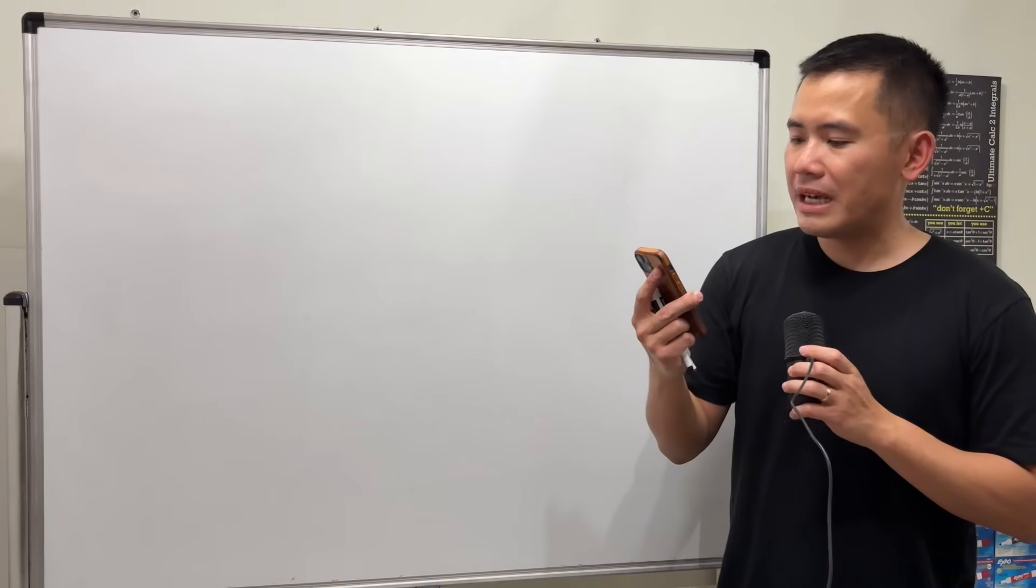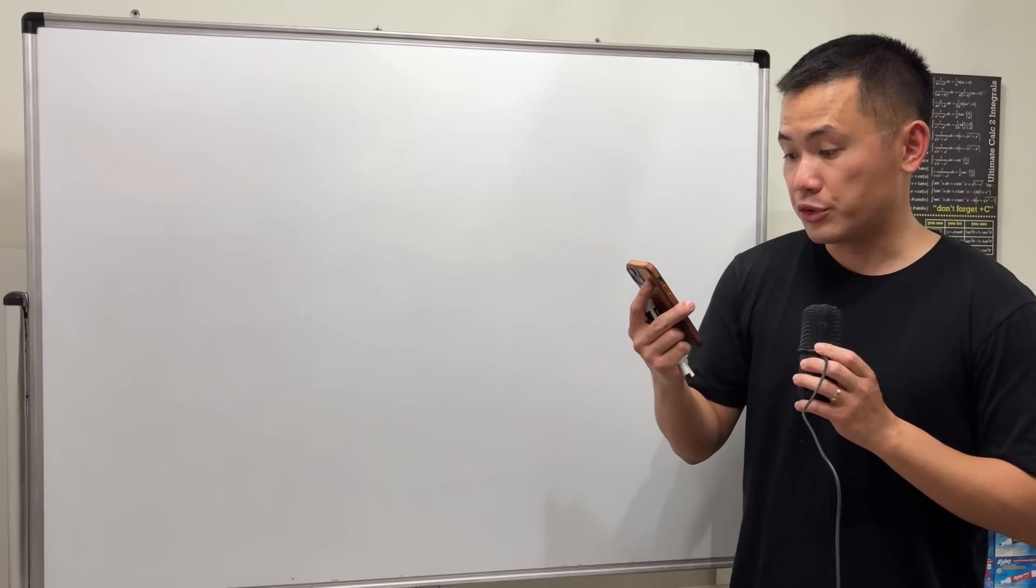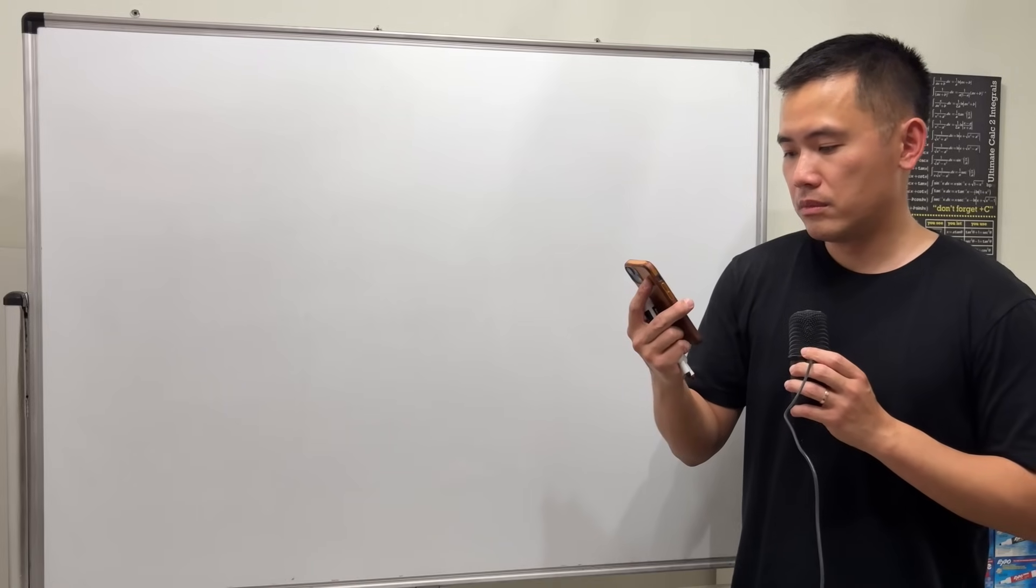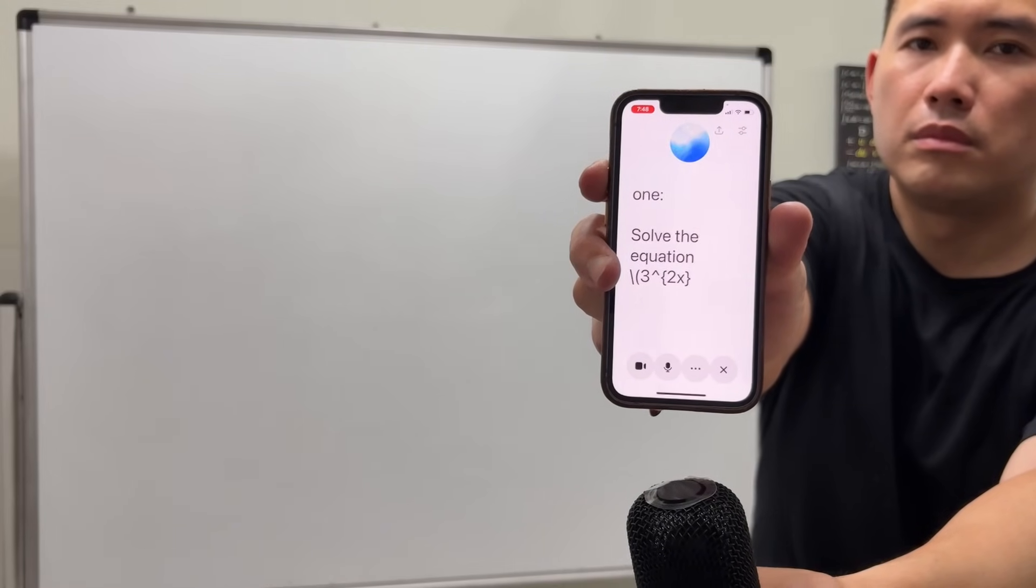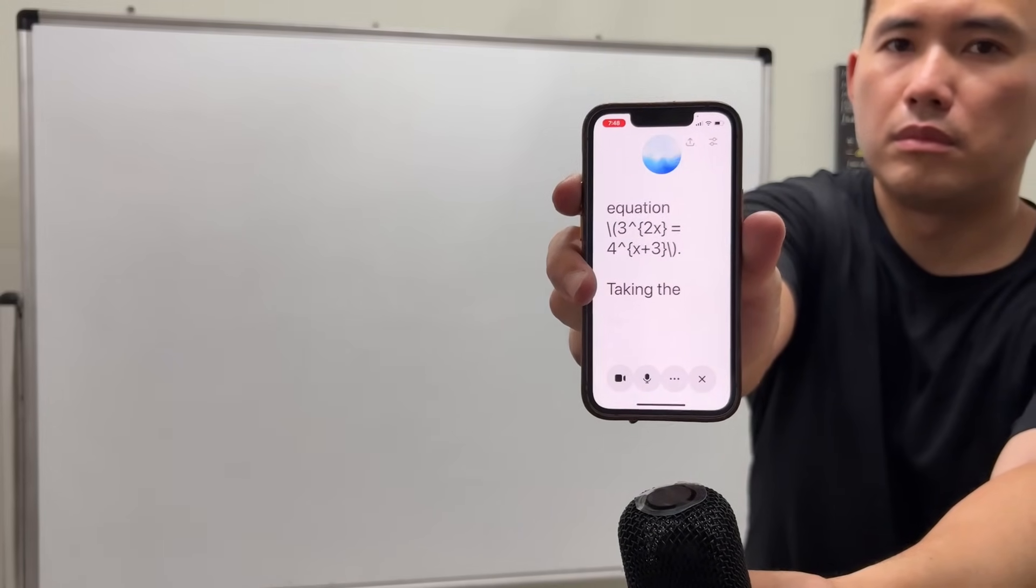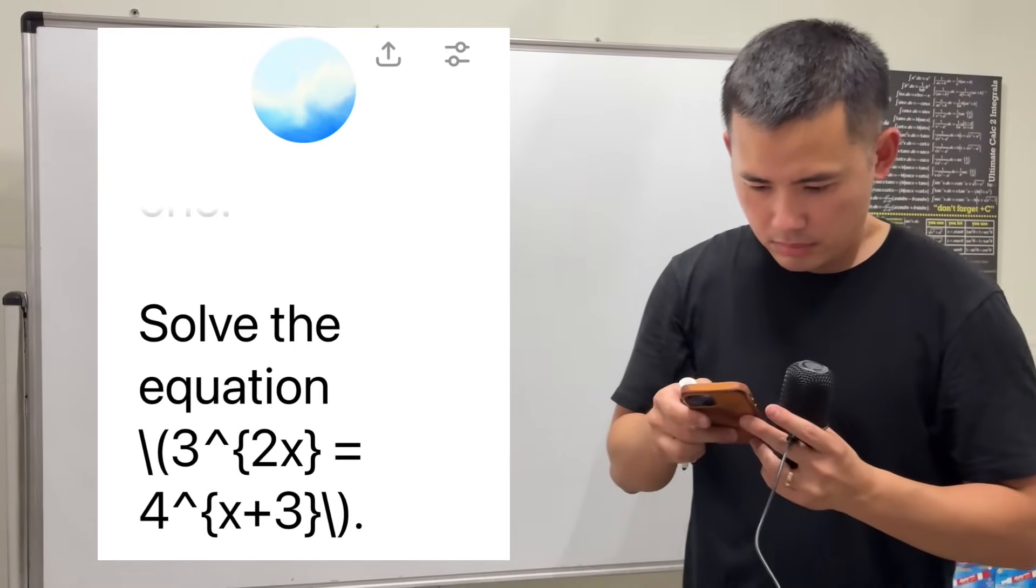Hey ChatGPT, I'm recording a math video right now. Can you please give me a hard exponential equation that's actually solvable with logarithms? Absolutely, here's a tough but doable one: solve the equation 3^(2x) = 4^(x+3). Taking the logarithm of both sides will let you isolate x and solve it.